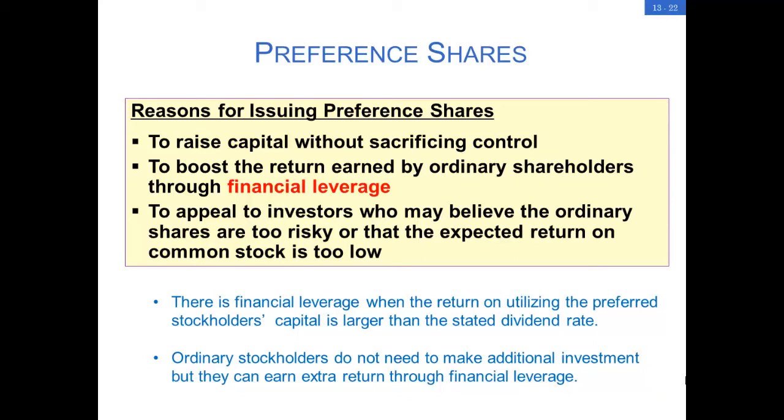The accounting for issuance of preference shares is basically the same as ordinary shares. If a company has two classes of shares — ordinary and preference shares — then the account names of share capital and share premium must be identified separately for each class. For example, share capital ordinary and share capital preference are two separate accounts in the accounting system.